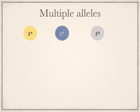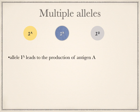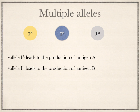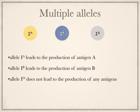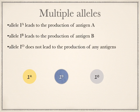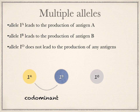Looking at multiple alleles: sometimes a gene has more than two alleles. The inheritance of the human ABO blood group is an example, with three alleles associated with the immunoglobin gene I. Allele I^A leads to production of antigen A; allele I^B leads to production of antigen B; allele I^O does not lead to production of any antigens. Although there are three alleles, only two are present in an individual at one time. The alleles I^A and I^B are codominant, whereas I^O is recessive to both.